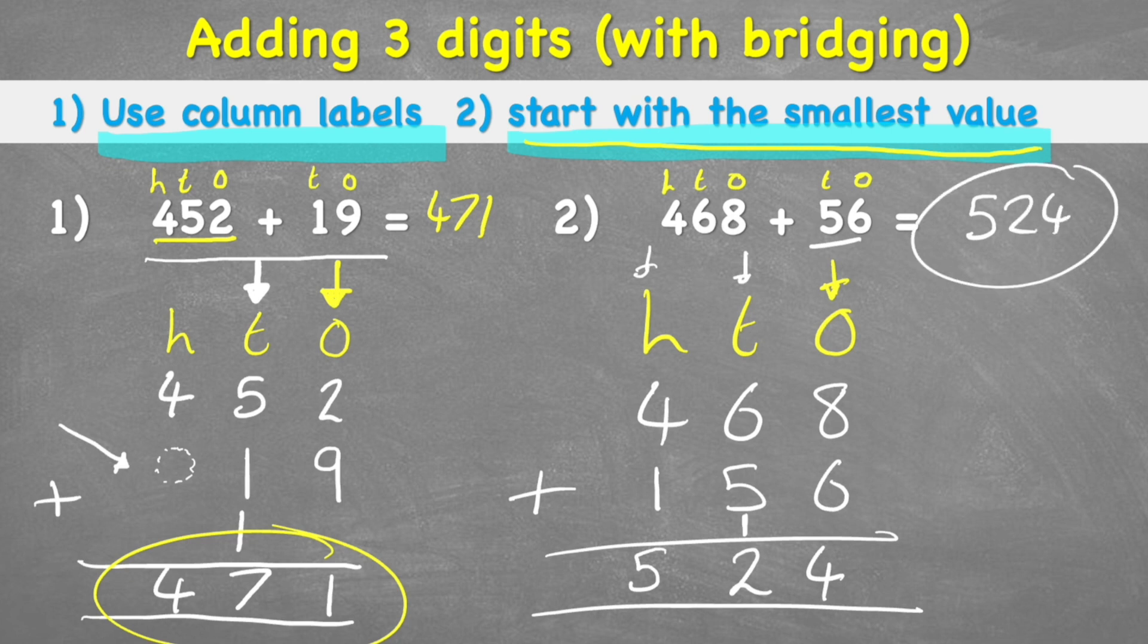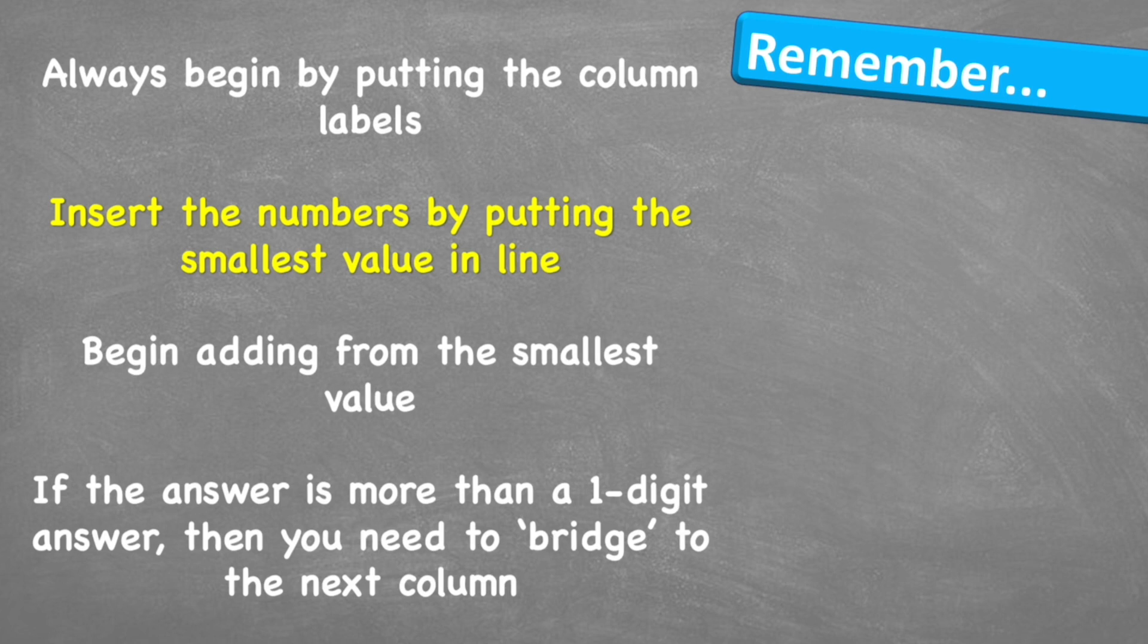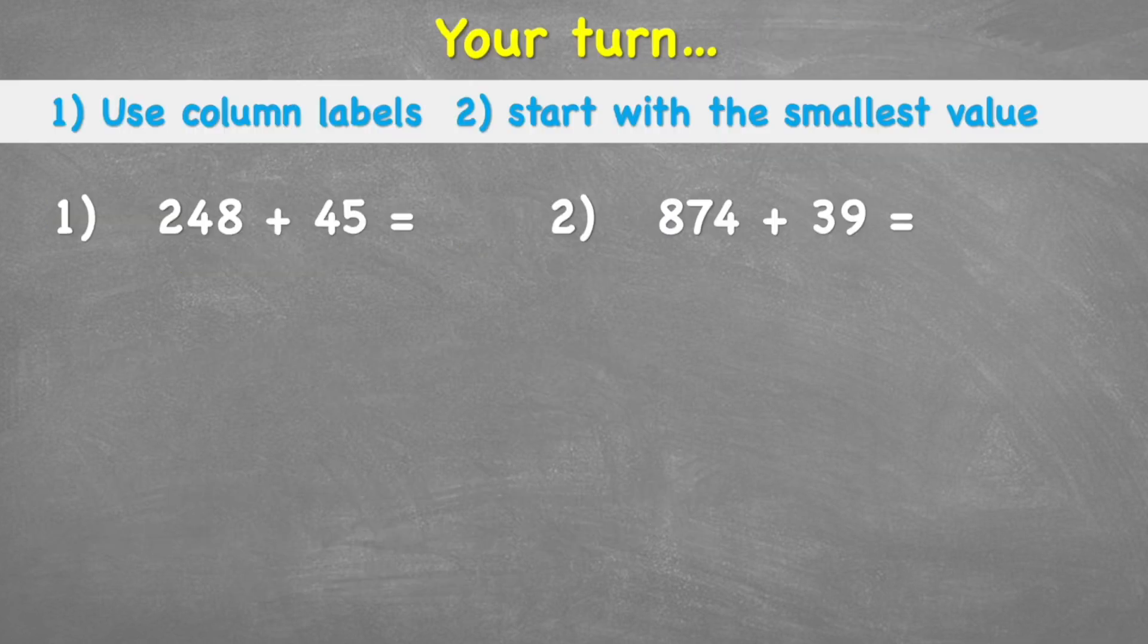That can get a little bit confusing. I really suggest watching that part again so that you get a full and good understanding before you move on. Let's look at what to remember: always begin by putting the column labels. That is really, really important. Insert the numbers by putting the smallest value in line first, and then begin adding from the smallest value. If the answer is more than a one-digit answer, then you need to bridge to the next column or partition those numbers and put them into the correct columns.